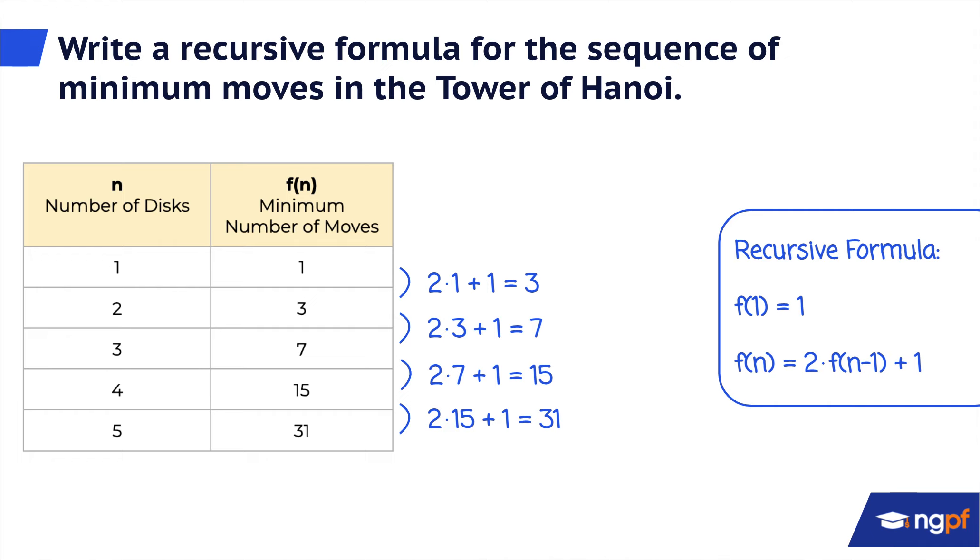We finished our formula. The first part, f of 1 equals 1, tells us that the first term is 1. The second part tells us that we can find the value of the term n by multiplying the term before by 2 and adding 1.